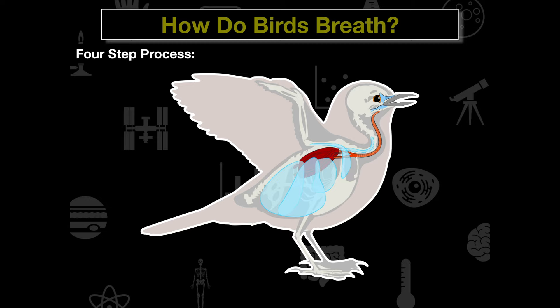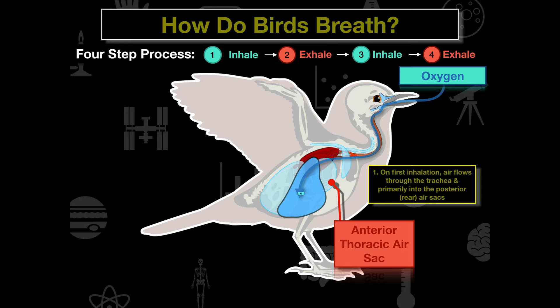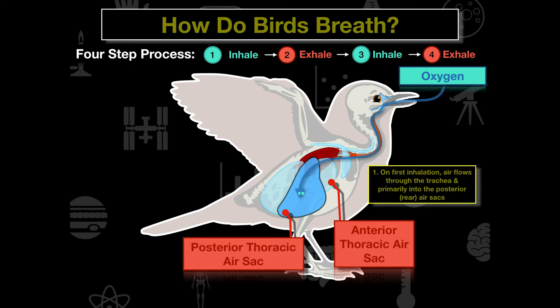Birds breathe quite differently — via a four-step process. They inhale, exhale, inhale again, and exhale again, using their air sacs. On the first step, the bird inhales oxygen and the air flows through the trachea into the posterior air sac — the posterior thoracic air sac.